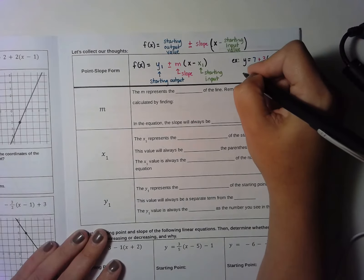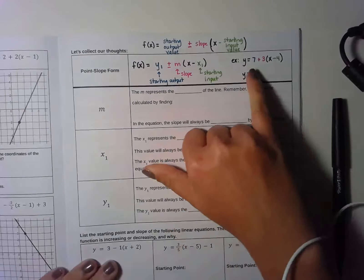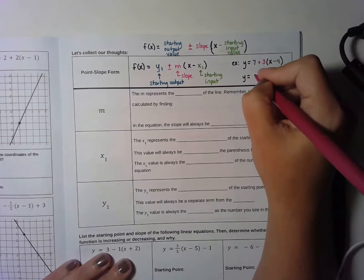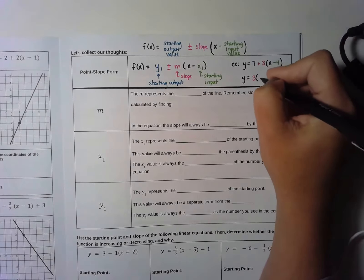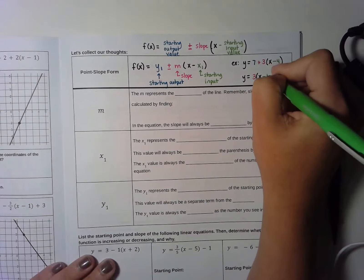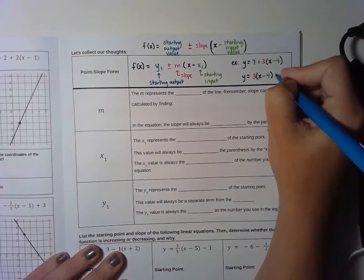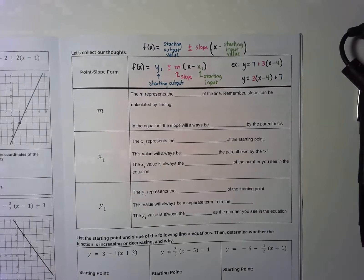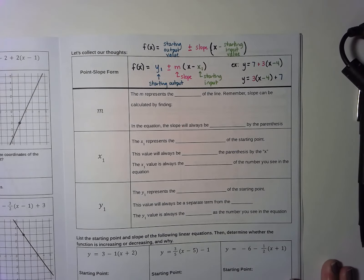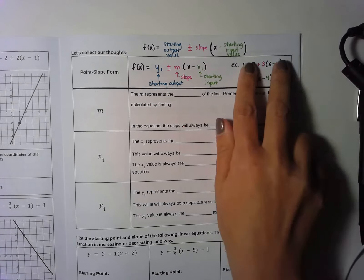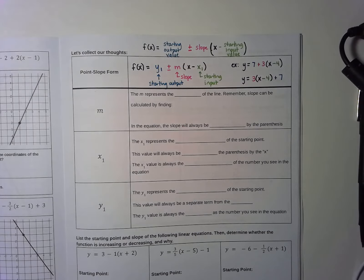Sometimes we rearrange the order of this equation just a little bit. I could take this exact same equation and move the starting output to the end. In that case, the 3 would be first, then parentheses x minus 4, and instead of having the plus 7 at the beginning, I would have that 7 at the end of the equation. These two equations mean the same thing — it's just that some people prefer to put the x and slope first versus having them come at the end.